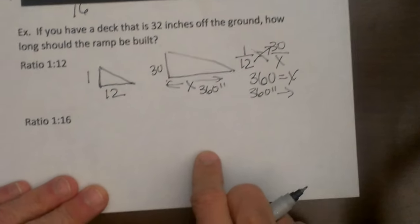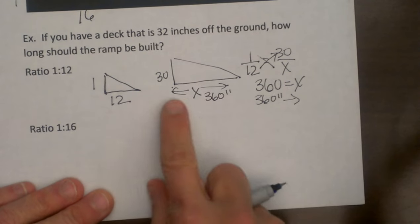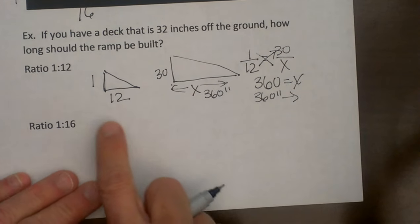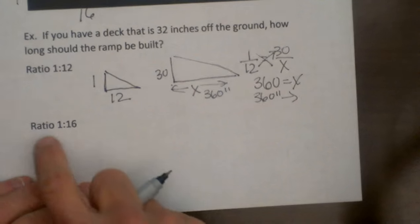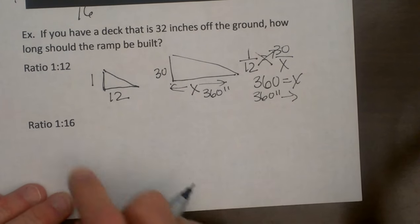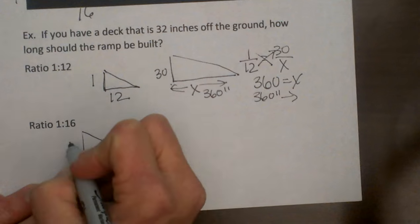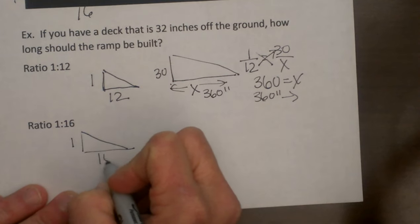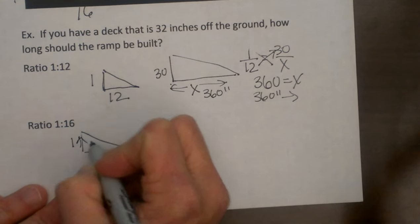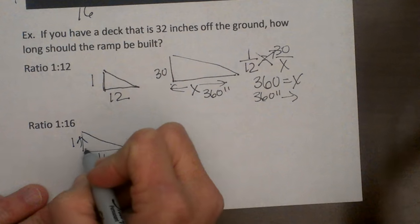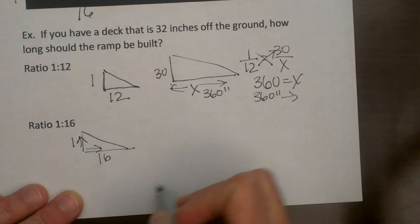Now let's see, maybe we have a little bit more room than 360 inches. Let's see what the ramp's length would be with the more preferred 1 to 16 ratio. Let's draw another triangle and we are going to write it as 1 to 16, so every vertical rise of 1 inch will be a horizontal run of 16.